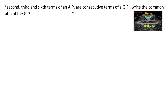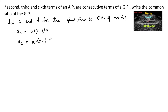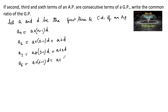If the 2nd, 3rd, and 6th terms of an arithmetic progression (AP) are consecutive terms of a geometric progression (GP), then find the common ratio of the GP. Let a be the first term and d be the common difference of the AP, so the general term is a_n = a + (n-1)d. Thus: a2 = a + d, a3 = a + 2d, and a6 = a + 5d. These three terms are in GP.